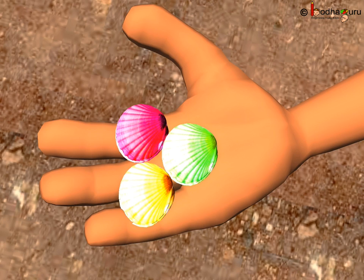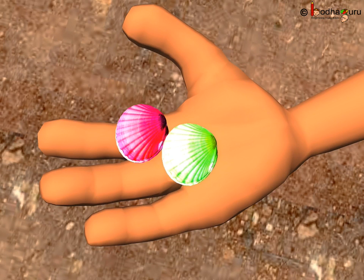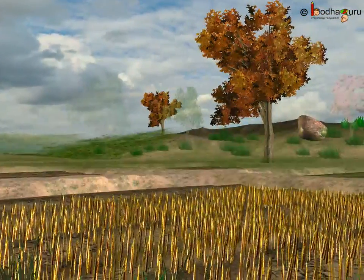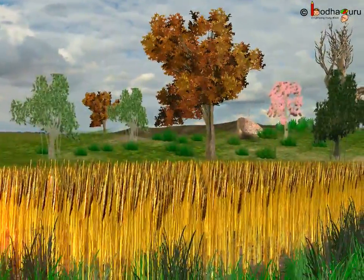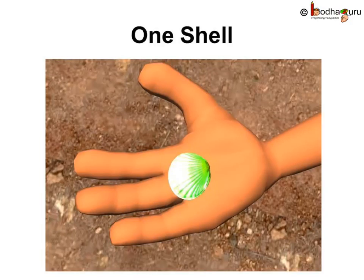So, next from the three shells, one shell was again taken away. Now the fisherman had one, two — yes, two shells. Next, out of the two shells, one shell was taken away to fulfill the wish of all farms becoming green and full of crops. After all, the fisherman was a kind and helpful man, right? Then how many shells were left with the fisherman? Only one shell.